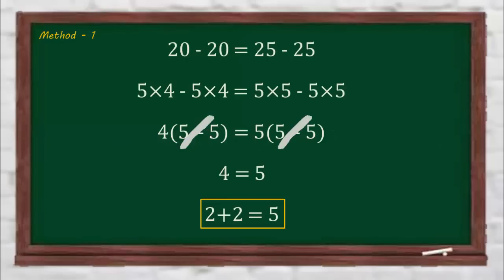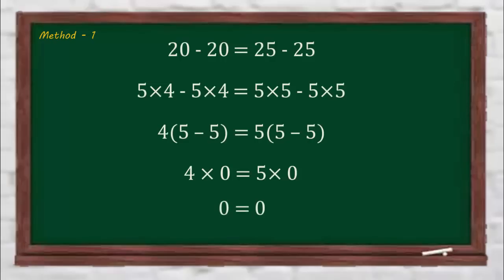In method 1, this step has the mistake. You cannot simply cancel out the brackets on both sides because the value of the bracket is equal to 0, and 0 is not meant for cancelling out. On multiplying, it will make both sides as 0, and now the equation is balanced.